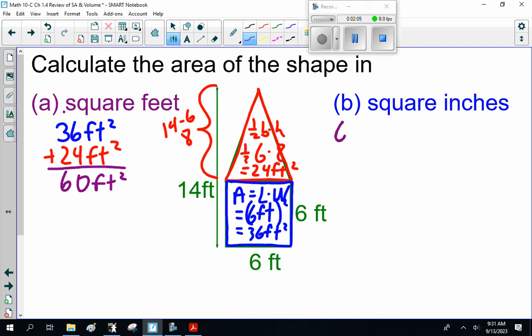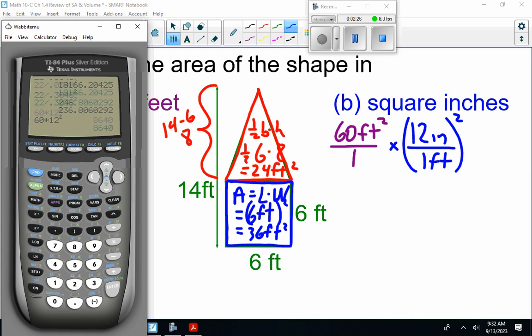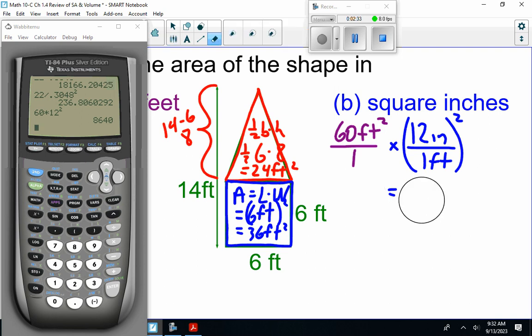I'm going to do 60 square feet over 1. Now, that is, let me see, feet to inches, that's 12 inches to 1 foot. I'm going to have to square this. So, 60 times 12 squared, 8640.